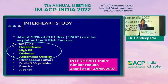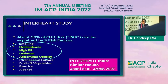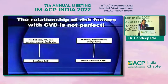The INTERHEART study risk factors include dyslipidemia, high BP, diabetes, and abdominal obesity. We know all of these and we are trying to treat and prevent them, but we still see many people without diabetes or hypertension getting coronary artery disease, and many diabetic, hypertensive, dyslipidemic patients somehow escaping coronary artery disease. So somewhere, some things we are missing.